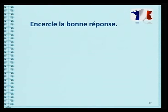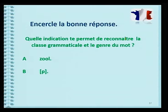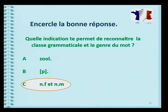Passons à la question 3. Quelle indication te permet de reconnaître la classe grammaticale et le genre du mot? Option A: n.f. Option B: crochet P crochet. Option C: n.f. et n.m. Bravo, c'est la réponse C, évidemment. Le nom féminin et le nom masculin.